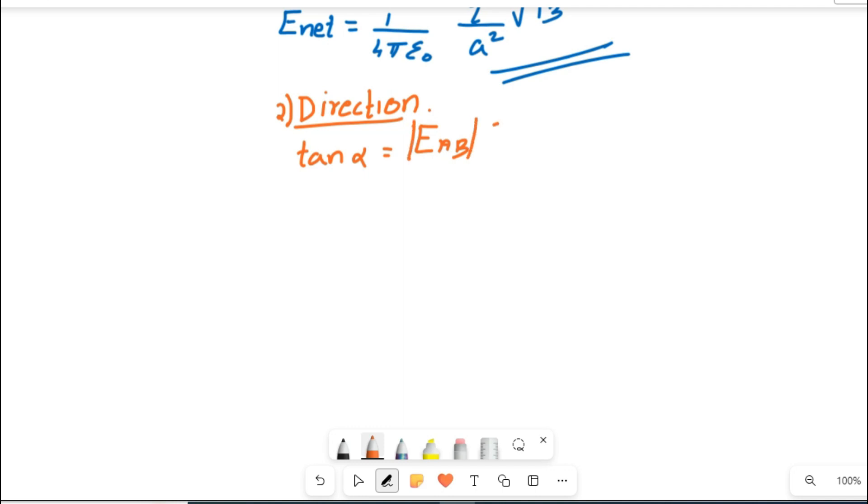tan alpha equals magnitude of E_AB sin theta. The theta here is 120, so sin 120, divided by magnitude of E_AC plus E_AB cos 120. We just want to apply the value of these two.